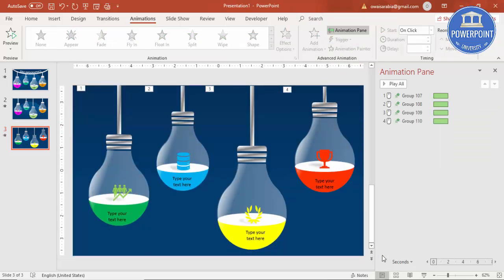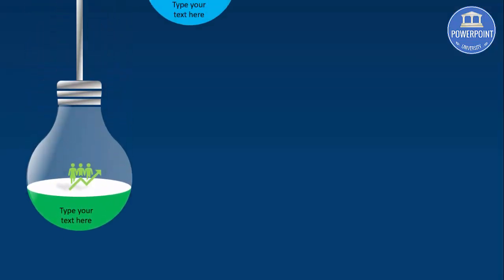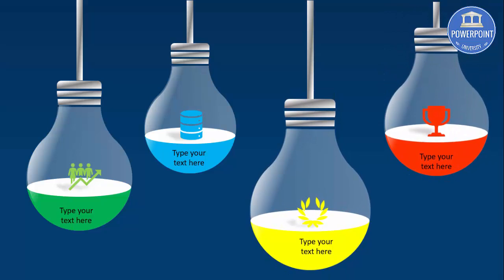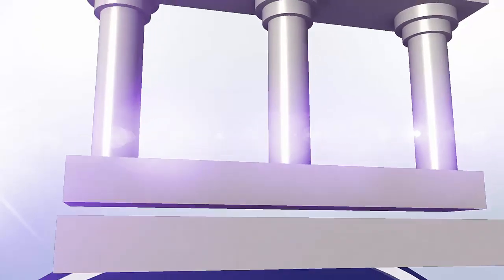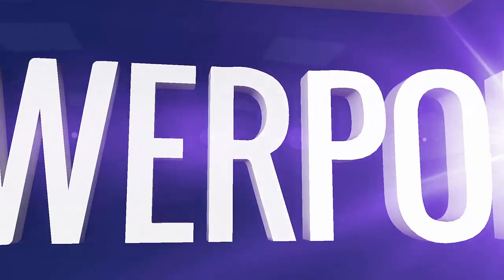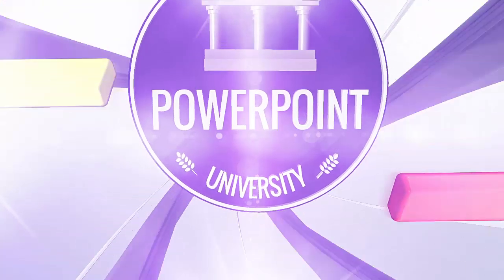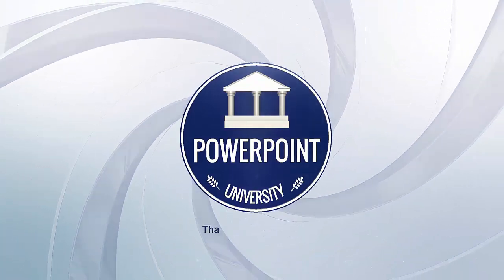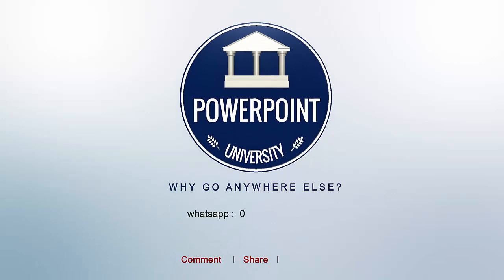Let's see how the slide looks in the slideshow. When I click, the first bulb comes in, then the second, the third, and the fourth. If you want, you can change the background and give different effects as you like. That's it from me, friends — thank you for watching my YouTube channel PowerPoint University. Don't forget to subscribe — see you soon with more interesting stuff. Till then, goodbye!